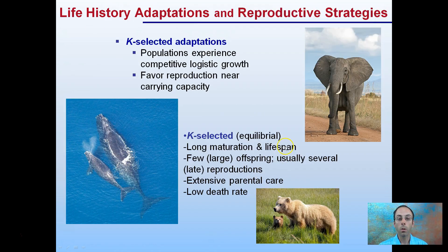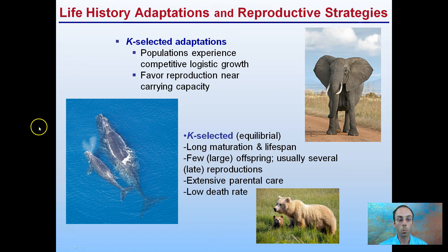In contrast to R-selected, we have K-selected adaptations. These are populations that experience a competitive logistic curve of growth, and they favor reproduction near the carrying capacity. K-selected individuals have a long maturation and lifespan. Examples would be elephants, bears, and whales. They have few but large offspring and usually several late reproductive cycles. They have extensive parental care and, as a result, a very low death rate.